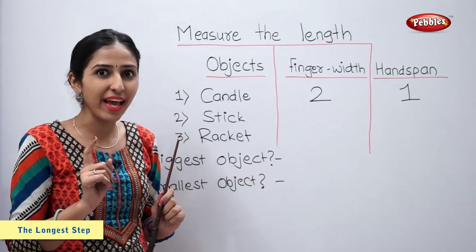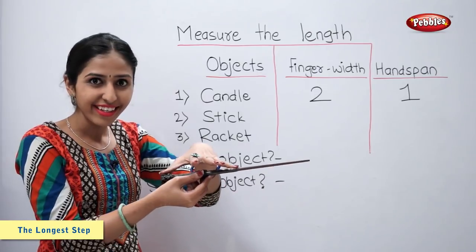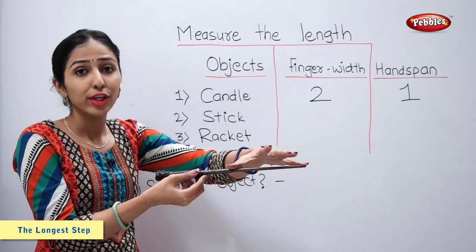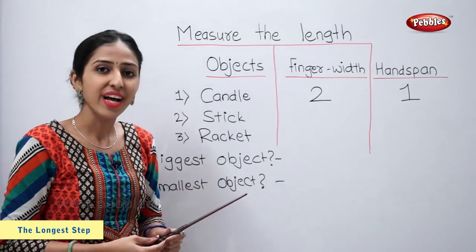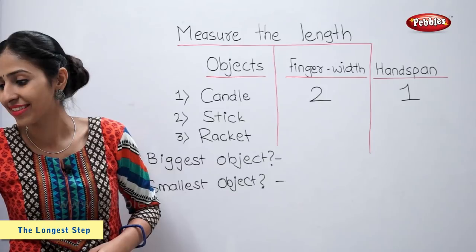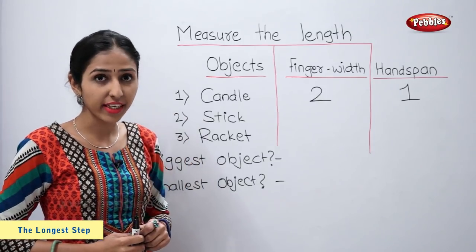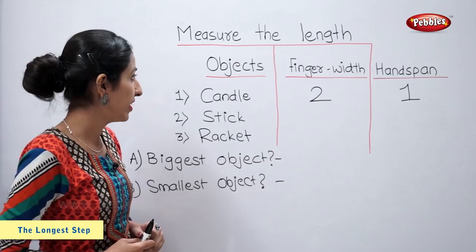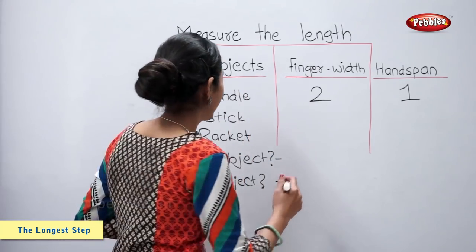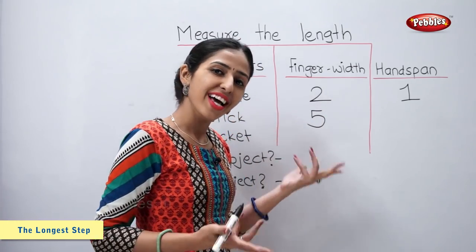Now handspan. One, two — two handspans. So the length of the stick is five finger width, two handspans.